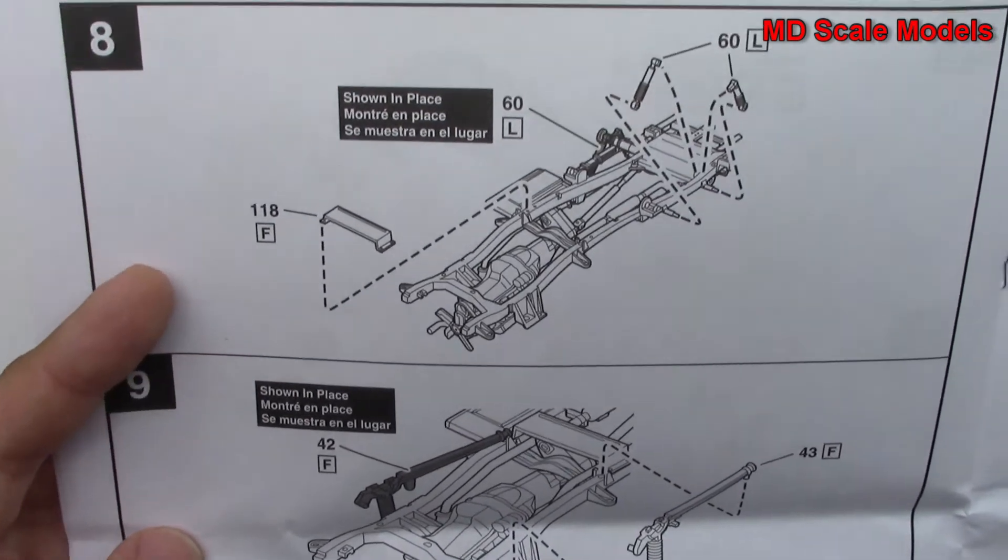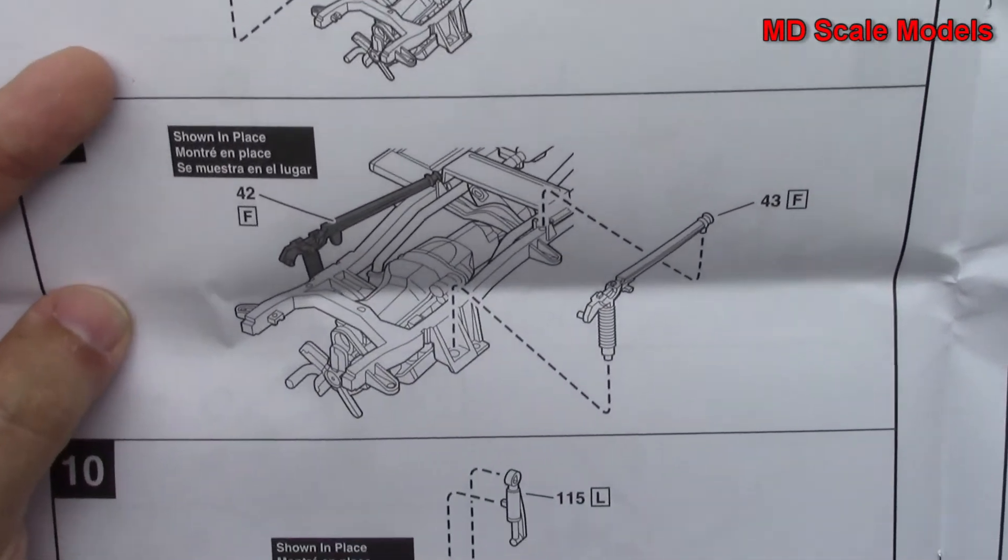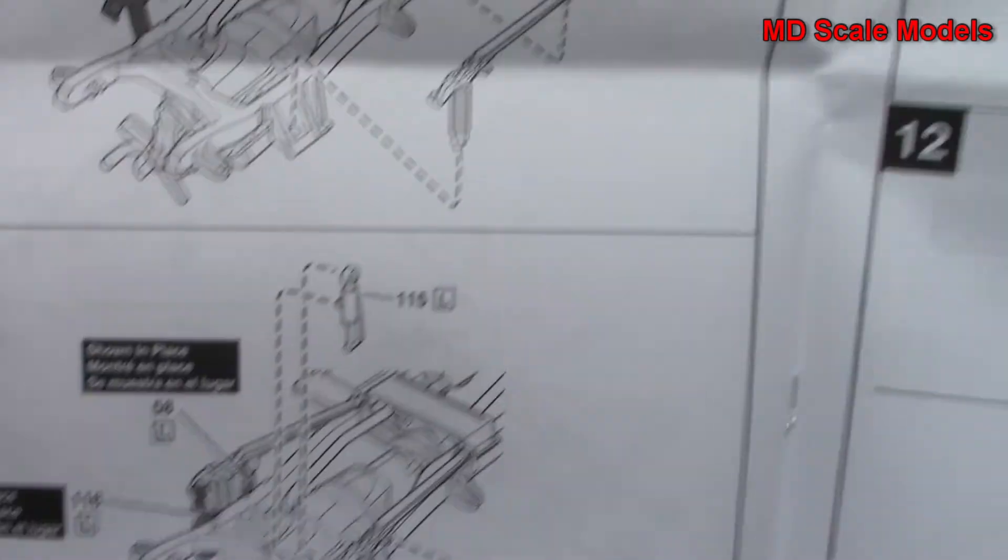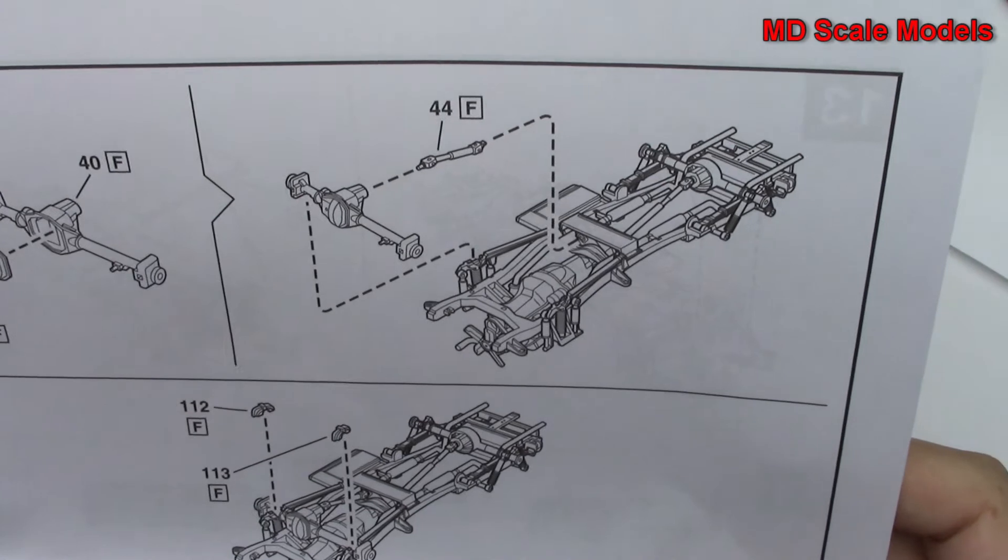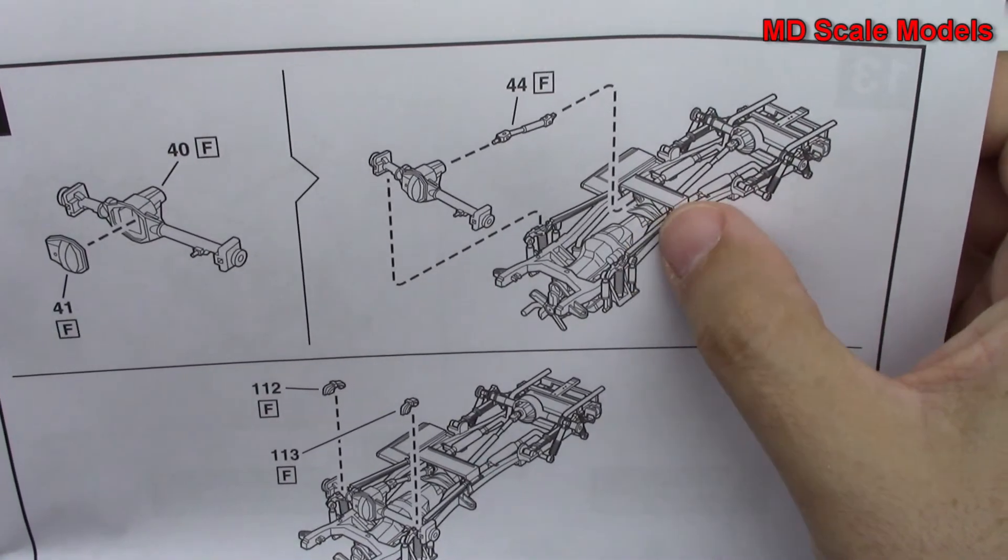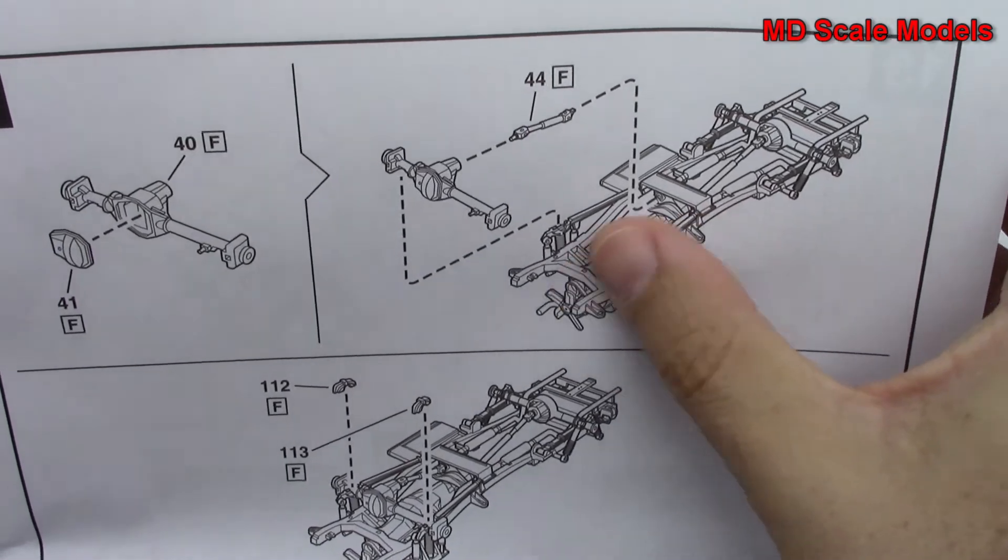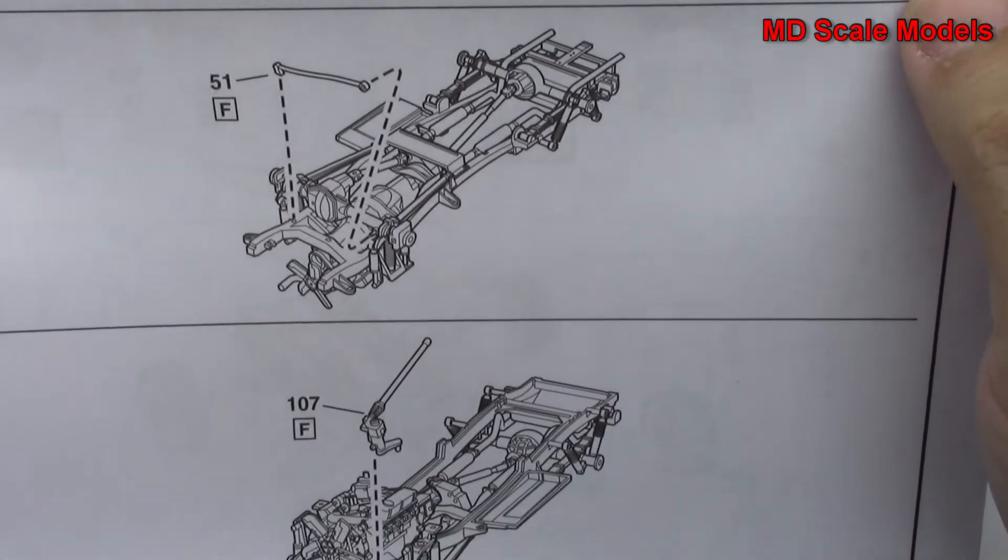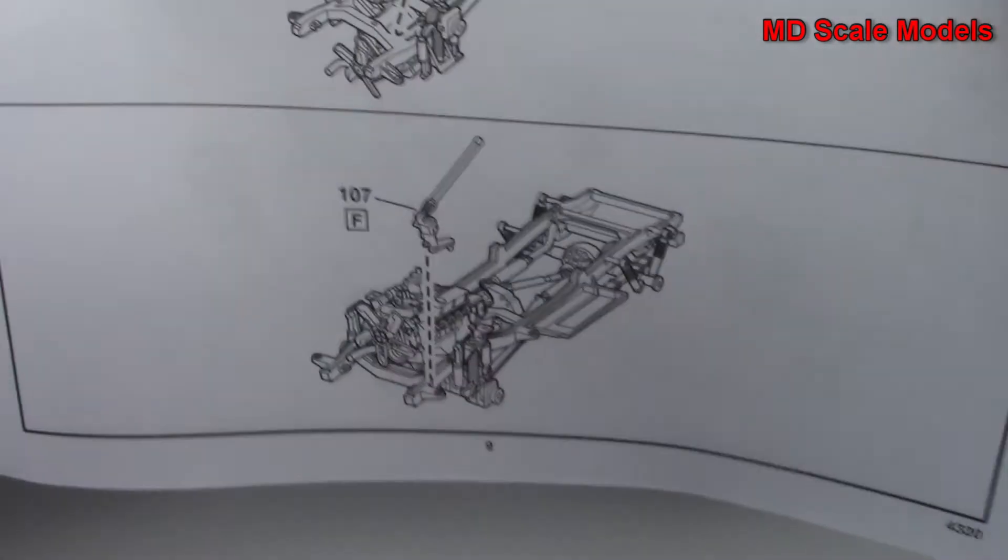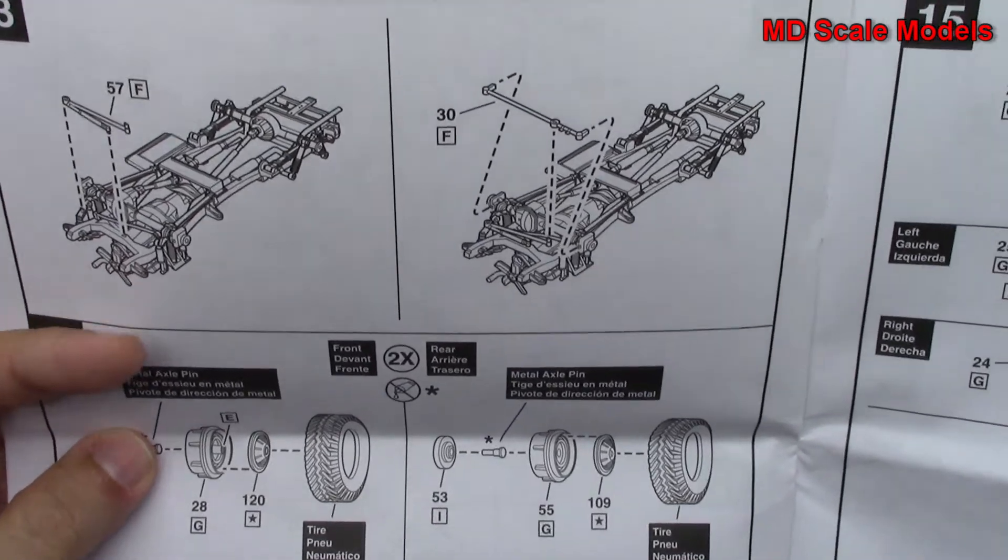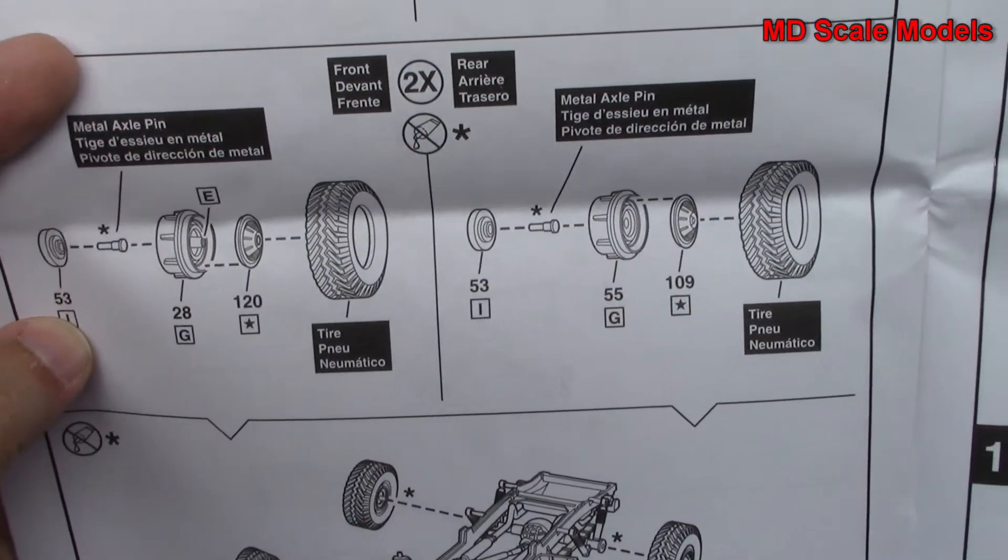More parts going on for suspension there. Lots of little pieces. And it does look like it's four-wheel drive because you've got the differential for the dual drive shaft and front axle. You really do have a lot of detail here on this chassis. Then we've got the wheels going on.